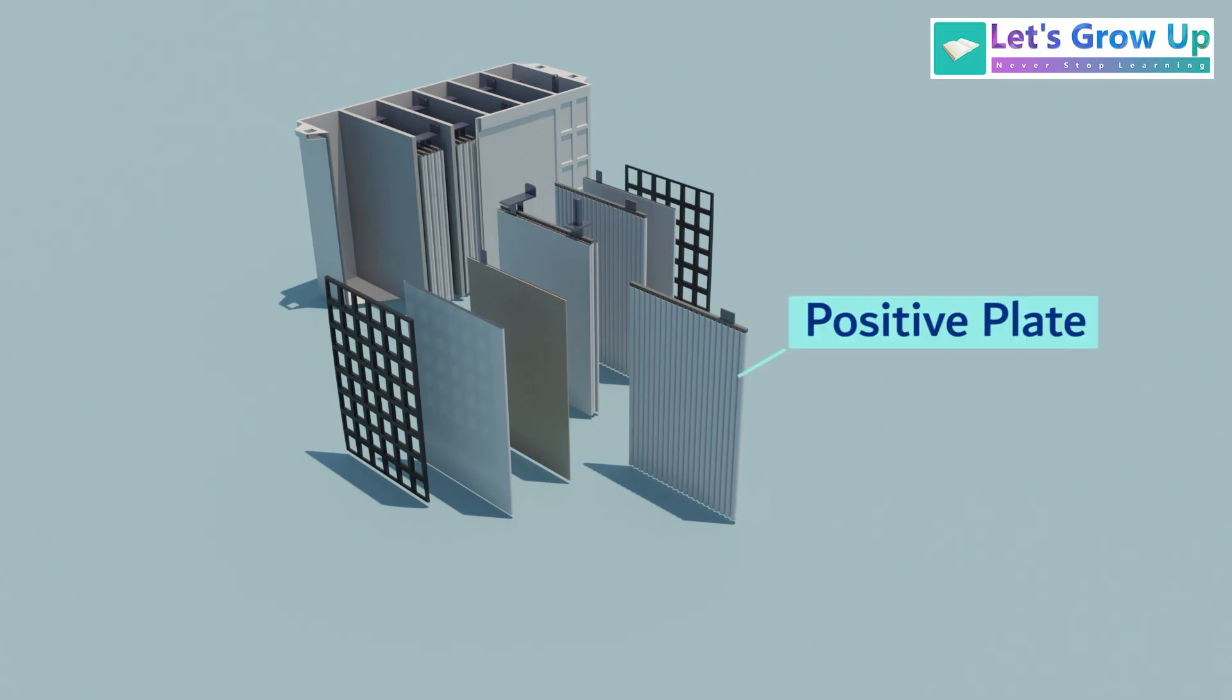This is the positive plate cathode. It is typically a grid made of a lead alloy and coated with a paste of lead dioxide, PbO2, which is the active material.